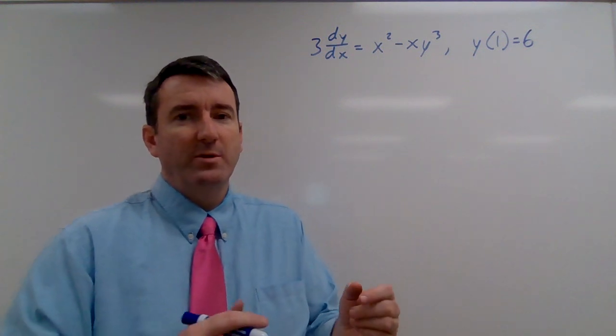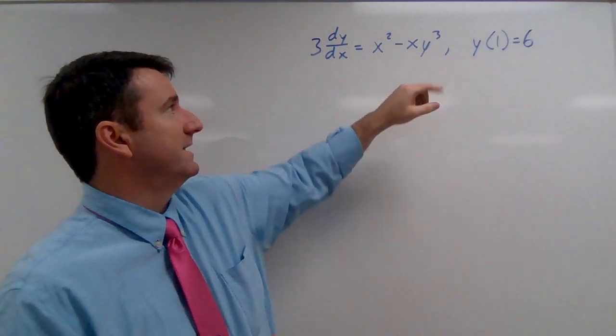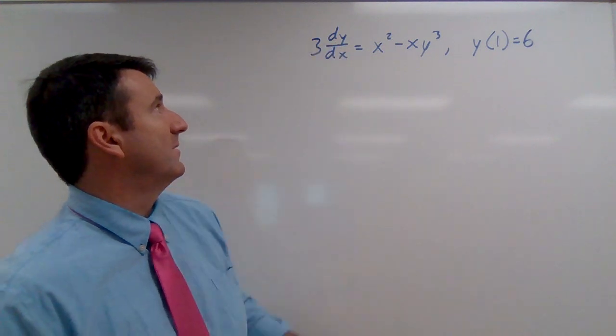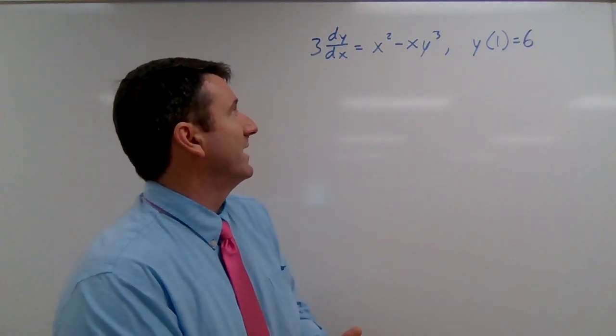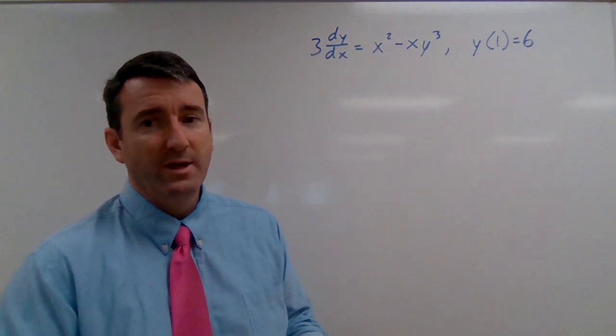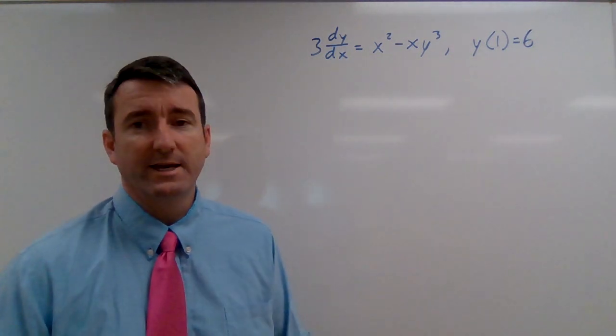All right, for this example, we're given this initial value problem: 3 times dy/dx equals x squared minus xy cubed, with the initial condition y of 1 equals 6.